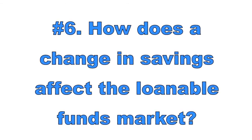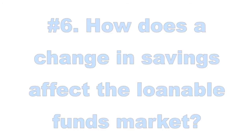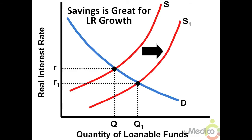Number six: how does a change in savings affect the loanable funds market? If there is an increase in savings by the private sector, the supply of loanable funds increases or shifts right, causing the real interest rate to fall. Lower interest rates increase investment spending, which is good for capital stock growth and long-run economic growth. Additionally, low real interest rates depreciate the value of currency — foreigners get a lower return on bonds — and when currency depreciates, net exports increase as goods look cheaper to foreigners.